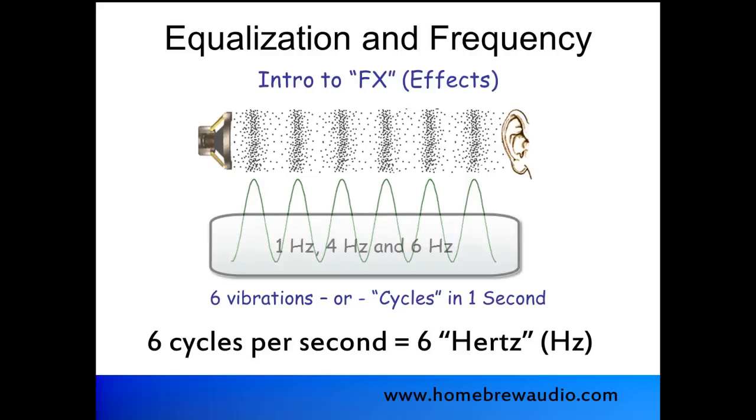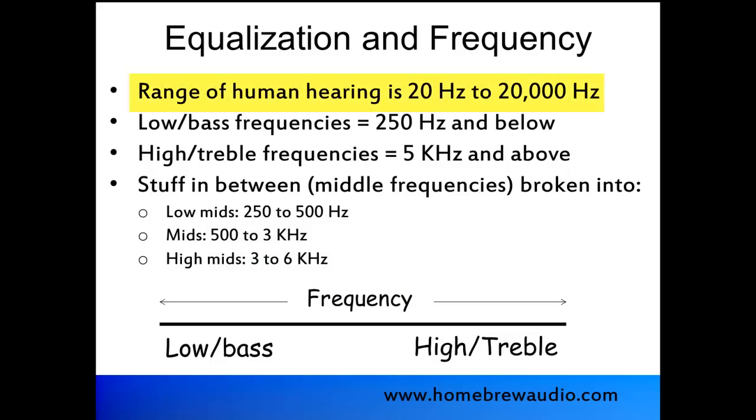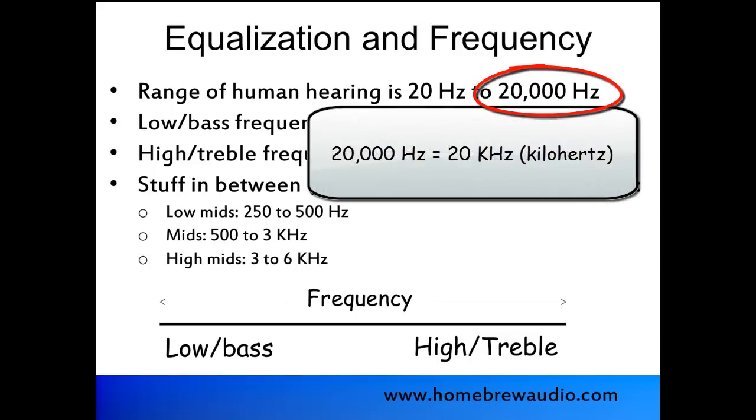All three of those examples, though, that we just looked at, are frequencies that humans can't hear. Humans can only hear audio that vibrates in the range of 20 Hertz to 20,000 Hertz. Air molecules have to vibrate at least 20 times per second before humans can hear it. And we can't hear anything over 20,000, or 20 kilohertz.